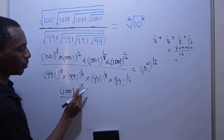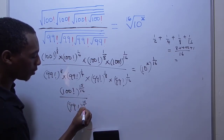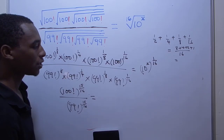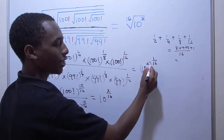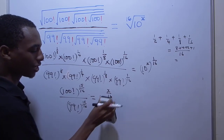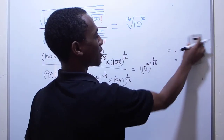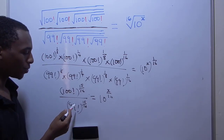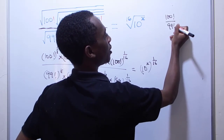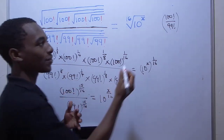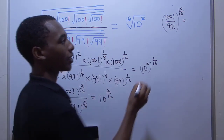So that's 15 divided by 16. All this divided by 99 factorial to the power 15 over 16. And this all equals 10 to the power x over 16 — we just multiply the powers: x times 1 over 16 gives x over 16.